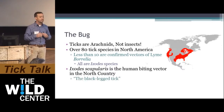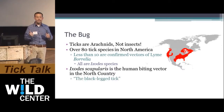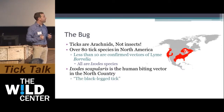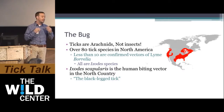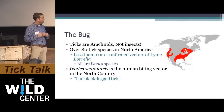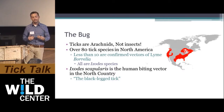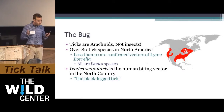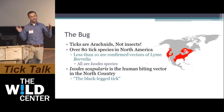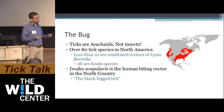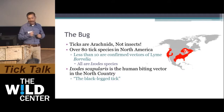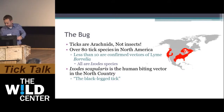Ixodes scapularis is the human-biting vector here in the North Country. This is commonly, in the scientific world, termed the black-legged tick. A lot of people call it the deer tick, but there are a lot more ticks that feed on deer, so we as scientists have given it the term the black-legged tick.